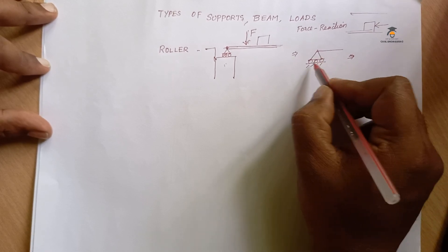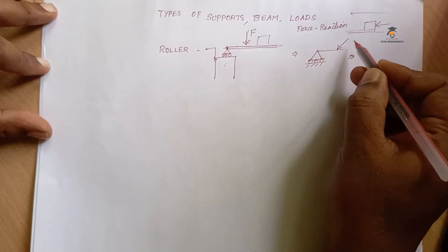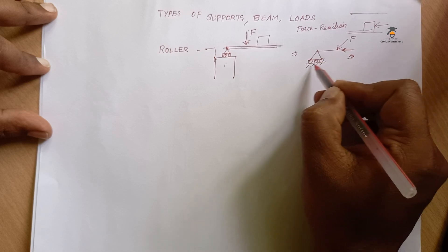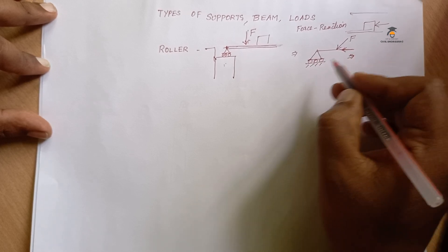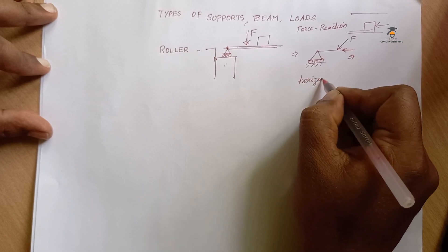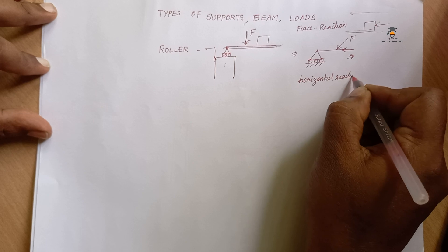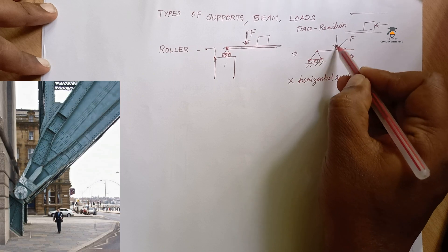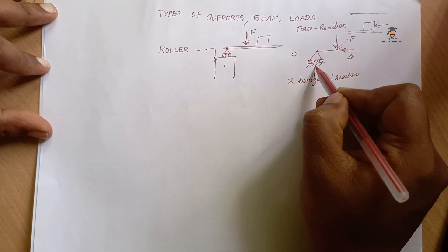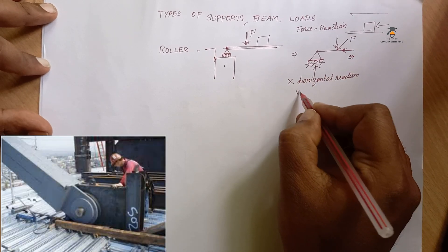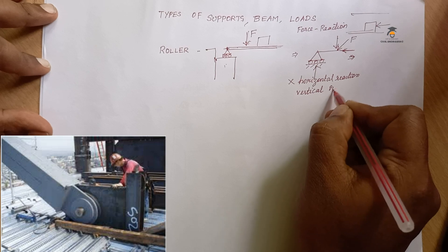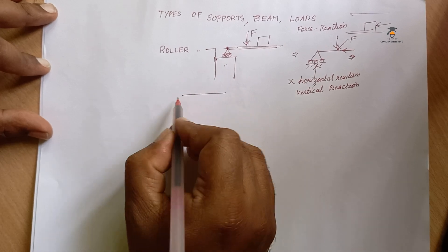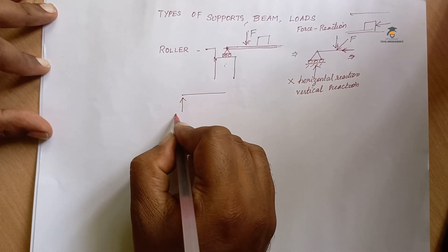For example, this object has an inclined force. In the inclined force, there is a horizontal component. In the horizontal force, the object is not aligned, so there is resistance and a horizontal reaction. There is no horizontal reaction in roller support. If it is a vertical component, it will resist, so there will be a vertical reaction. If it is a roller support, there is only a vertical reaction.